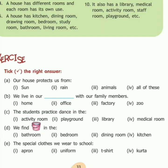Question number 1 says, tick the right answer. There are 4 options given to us and we have to choose the right one. Part A: our house protects us from sun, rain, animals, or all of these. It protects us from all of these — sun, rain, and animals. So the correct answer is number 4.